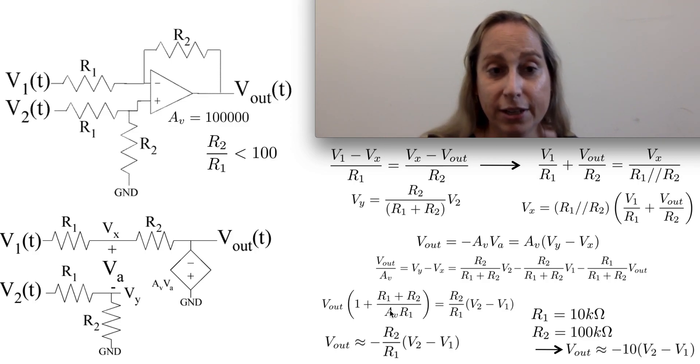So if it turns out that R2 over R1 is less than 100, which means it's a moderate gain for the op-amp, then this term here turns out to give you a number that's like maybe 0.1%. So 10 to the minus 3 or less. That's usually a term that's pretty negligible.